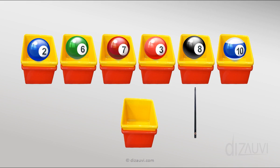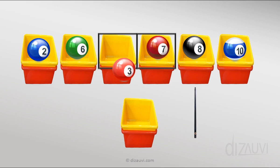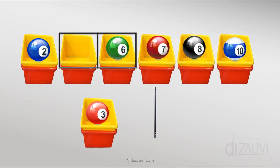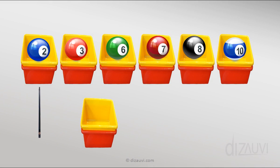And we keep repeating this process over and over until all the cue balls are sorted, which means that the pointer has come to the first position. So this was the bubble sort algorithm in action that you just saw.